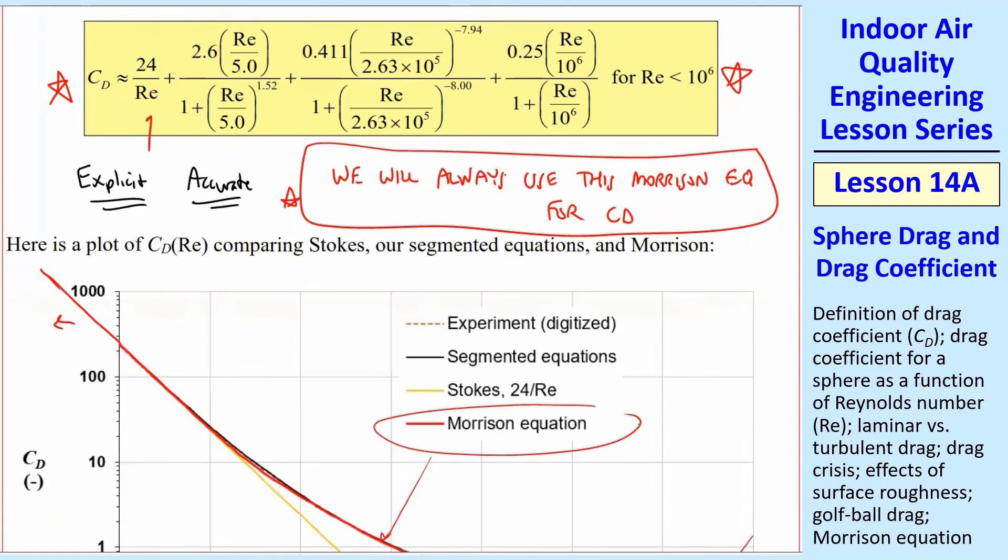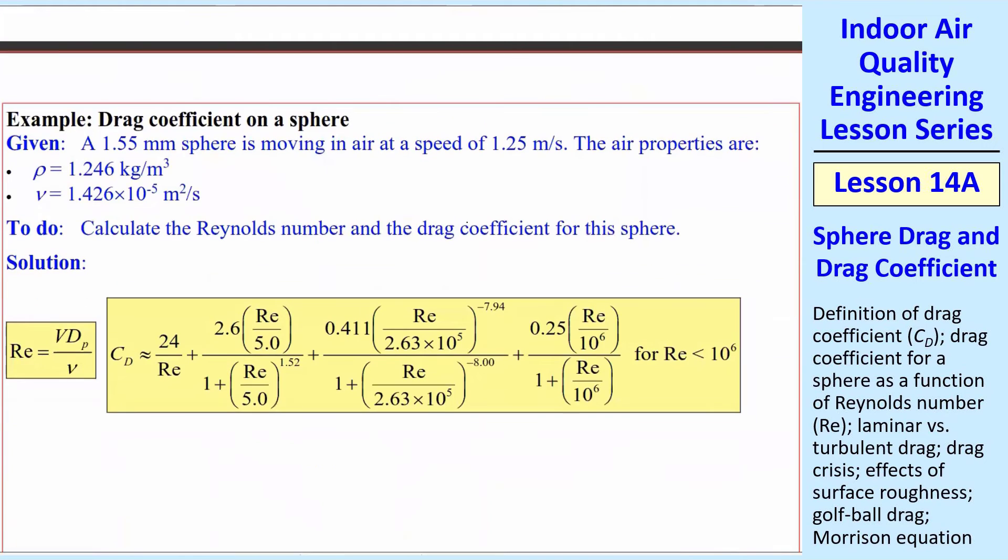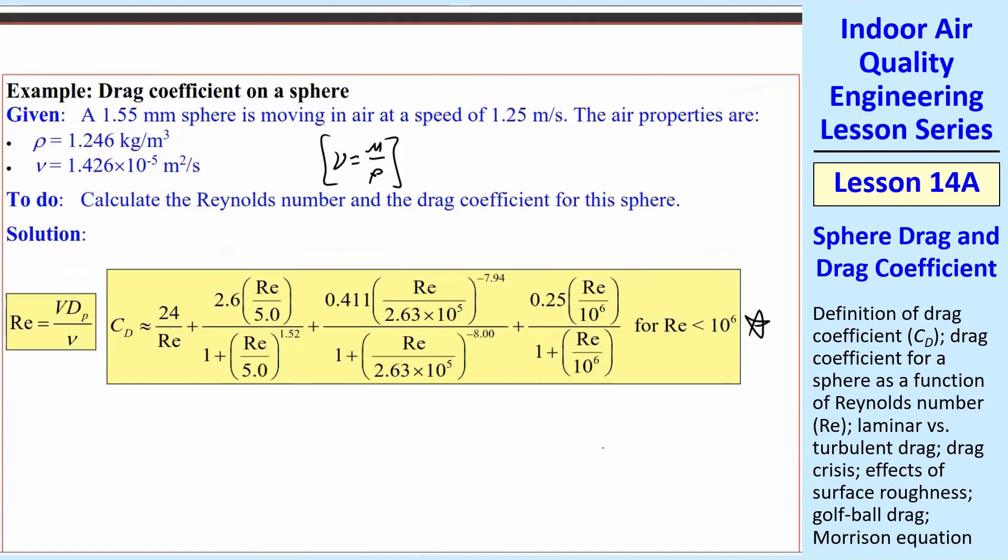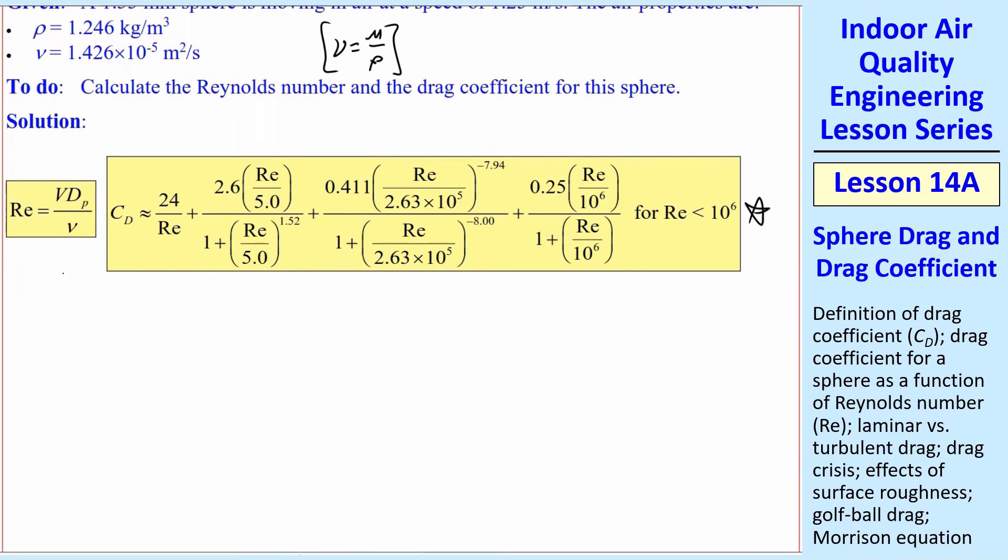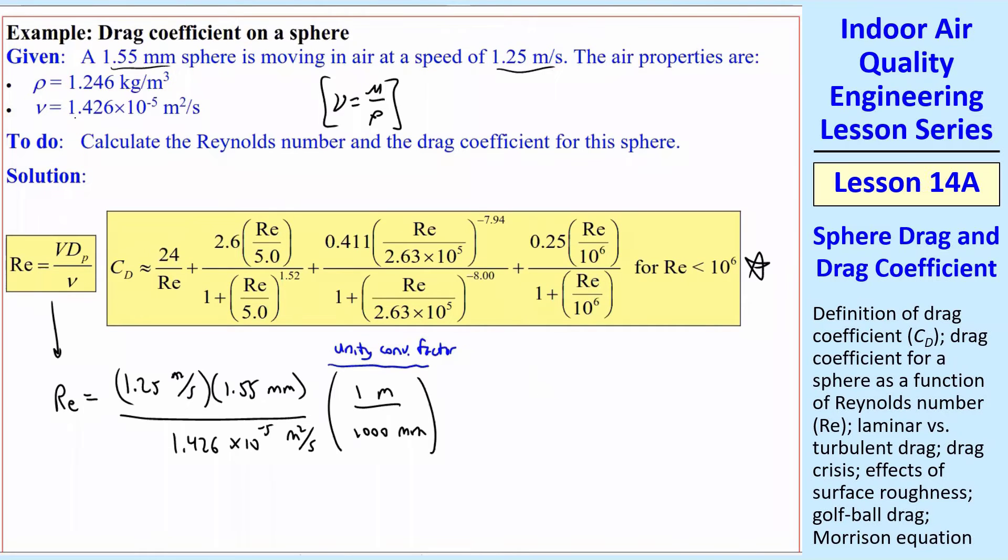But we're going to use this equation as our workhorse, as I said. So what I want to do now is an example. This is a simple example, but you've got to put this equation into your spreadsheet or MATLAB or whatever software you use. So let's take a quick example. 1.5 millimeter sphere moving at a speed. The air properties are given rho and nu. I gave nu in this case. Remember that nu is mu over rho. Sometimes you need to get nu out of mu or vice versa. And all I want you to do is calculate the Reynolds number and the drag coefficient for this sphere.